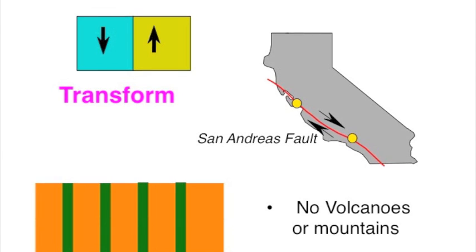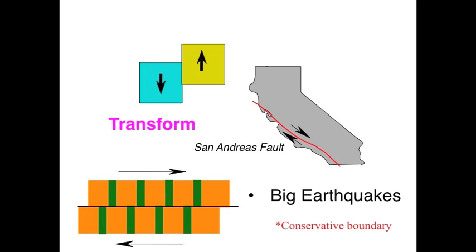This creates no volcanoes, no mountains, no eruptions. There is no magma seeping out of the crack — the plates just simply move past each other, as we see in the animation. This does create, though, a very big earthquake. This type of movement is called a conservative boundary, because nothing is created or destroyed, only conserved.